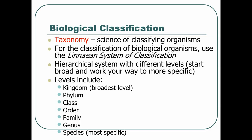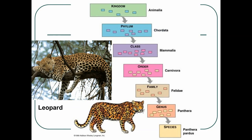Let's classify a leopard using the Linnaean system. Starting at the kingdom level, a leopard is in kingdom Animalia along with millions of other organisms. Its phylum is Chordata — it has a backbone. It's a mammal, so it's in class Mammalia. Order is Carnivora, the cat family. Its genus is Panthera and its species is pardis. Notice as we work toward the species designation, we become more and more specific — millions of organisms are in Animalia, but by the time you get to pardis, you're talking about one single animal: the leopard.